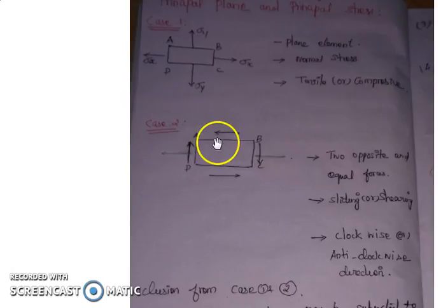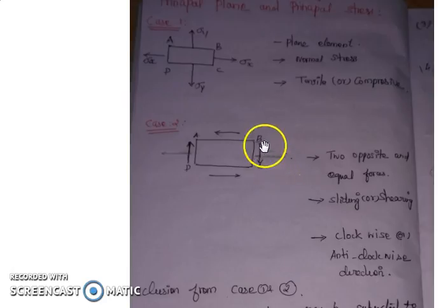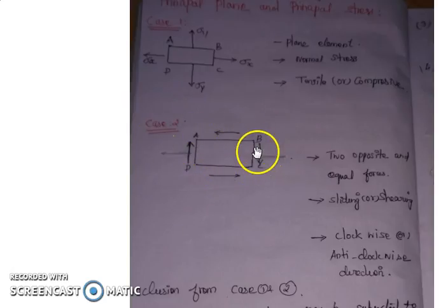Now consider the same plane element ABCD subjected to only shear stresses, that is shear forces. Two opposite and equal forces acting on a plane element cause that element to slide or shear. This shearing can occur in either a clockwise or anti-clockwise direction.